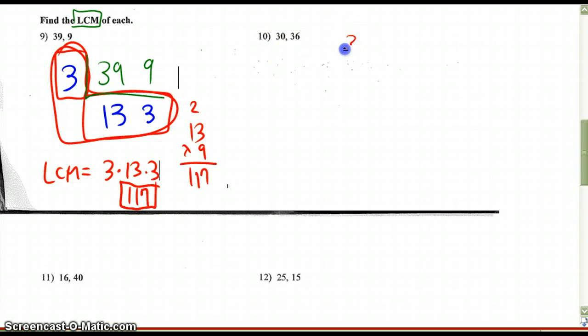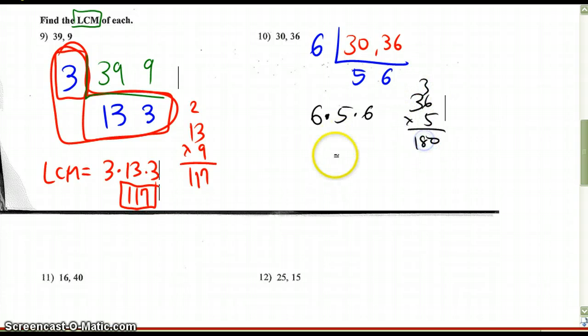For number 10, I would do the same hockey stick method. Divide. 30 and 36 can both be divided by the number 6. And the bigger the number goes, the easier and faster I'll get to my answer. I get 5 here and 6 here. They both cannot be divided any longer. So I'm going to multiply 6 times 5 times 6, giving me 36 times 5. And that would be an answer of 180 for my LCM.